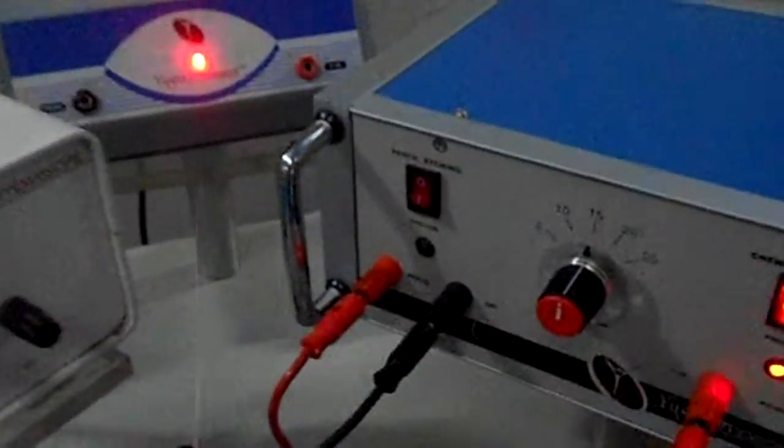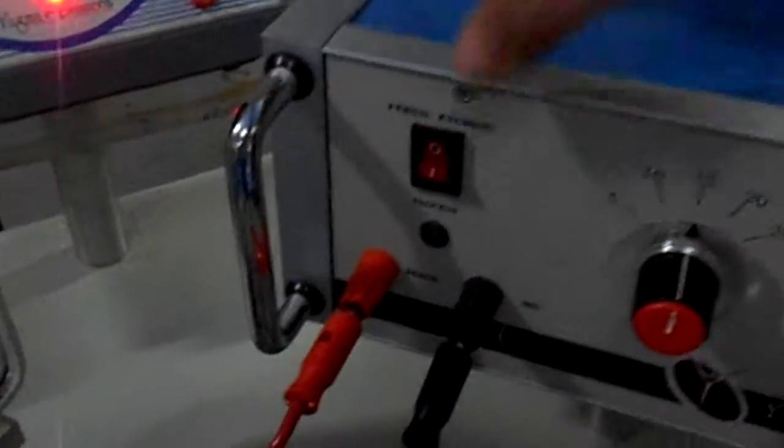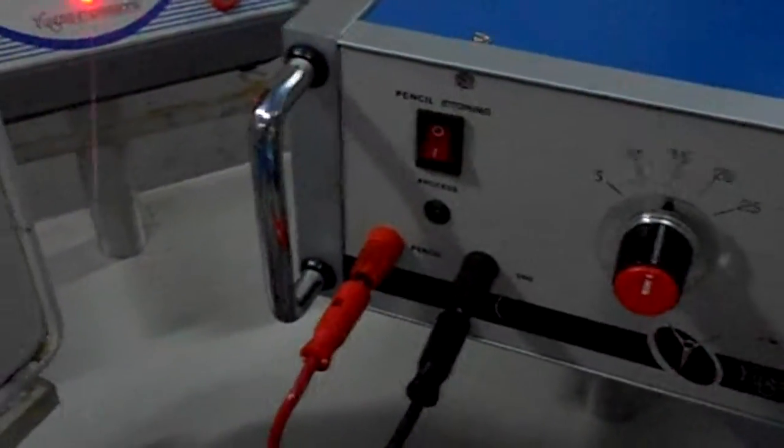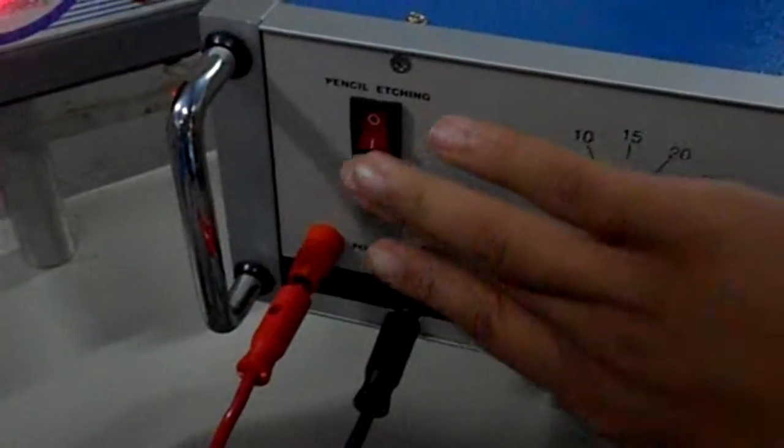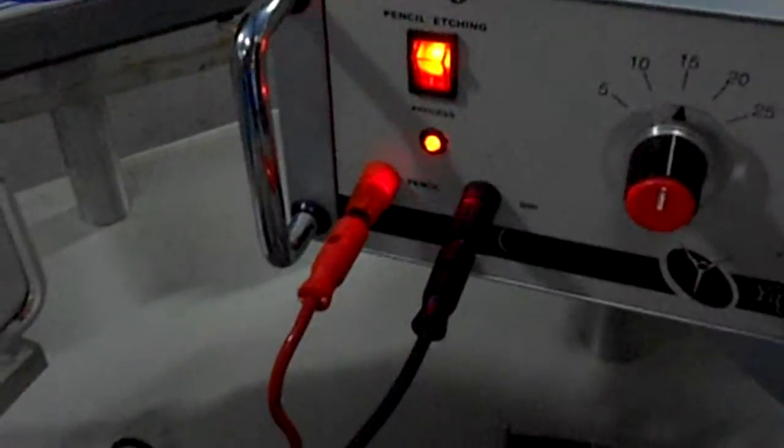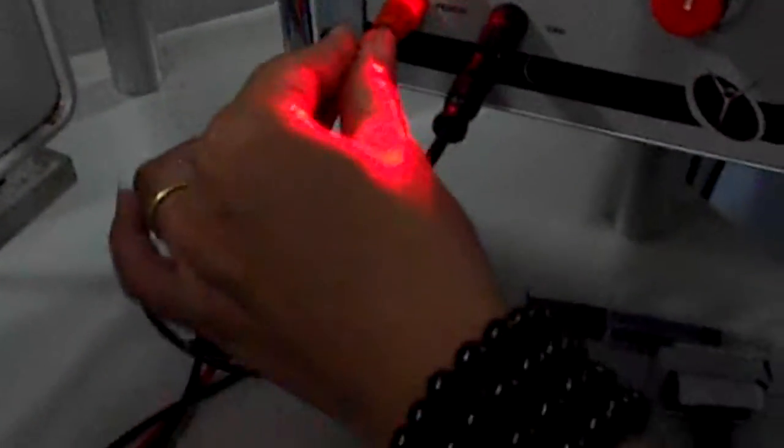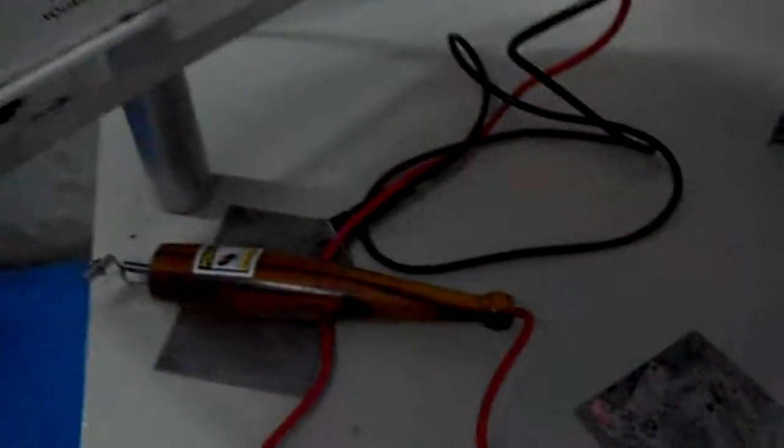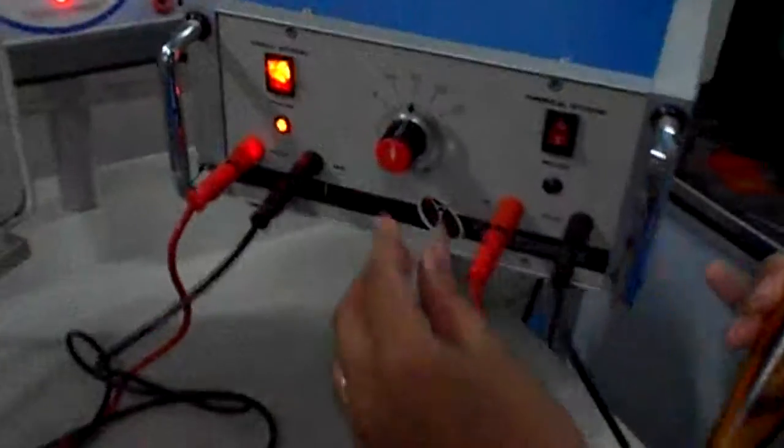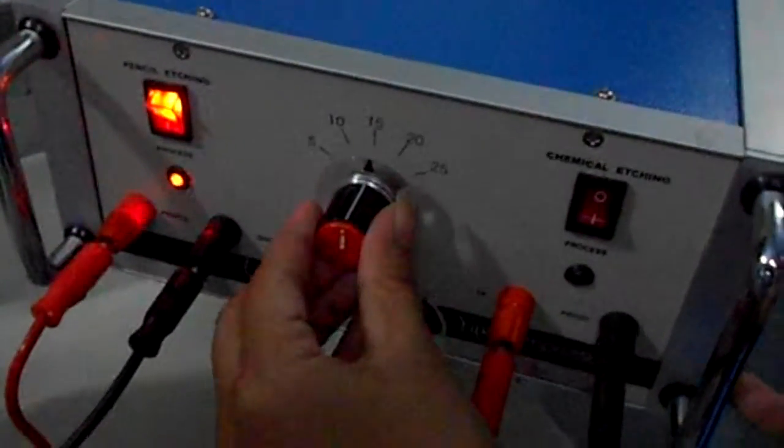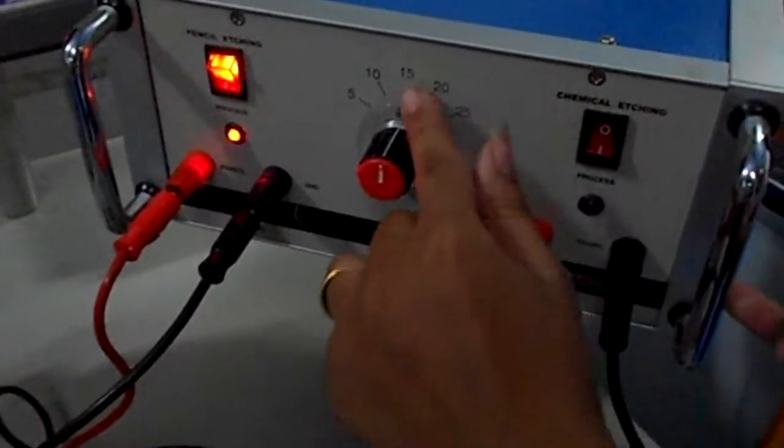Let's see the demo of pencil etching. Turn the power unit on. Attach the red cable to the pencil and black cable to the marking plate. Adjust the voltage as per your requirement. Normally set this voltage on 10 or 15.